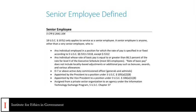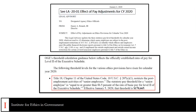Who is a senior employee? A senior employee includes individuals employed in positions where the rate of basic pay is specified or fixed in 5 USC 5311 through 5318. It also includes individuals whose rate of basic pay is equal to or greater than 86.5% of the rate for level 2 of the executive schedule — this includes most SES employees. It also includes O-7 or above active duty commissioned officers, certain appointments made by the president or vice president under 3 USC, and people assigned from a private sector organization under the information technology exchange program.